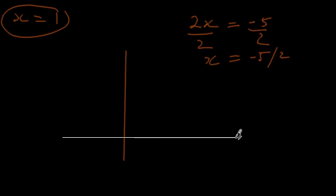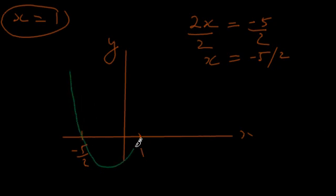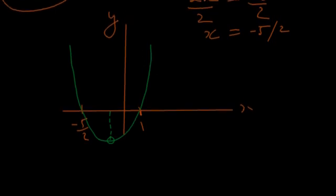Let's draw a set of axes to make this easier to see. We've got our y-axis and our x-axis. Let's plot the point x equals 1, and negative 5 halves is going to be somewhere over to the left — these are the roots of our function. Our parabola passes through those roots, cutting through the x-axis at those points, and the vertex is going to be somewhere right in the middle between negative 5 halves and 1.